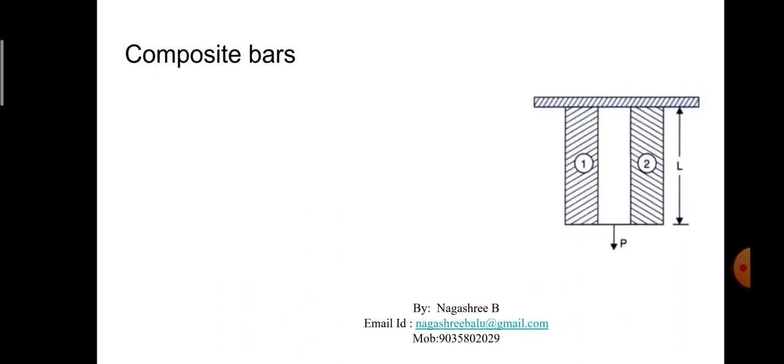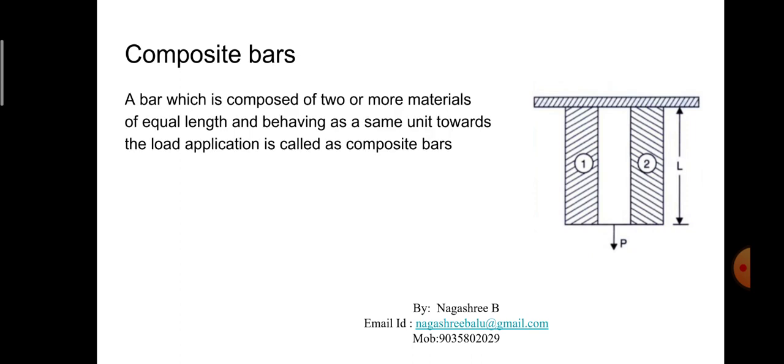Composite bars are bars which are made of two or more different materials, equal in length, fixed rigidly at each end. They behave as a single unit for extension or compression when subjected to axial tensile or compressive load — this is called a composite bar.